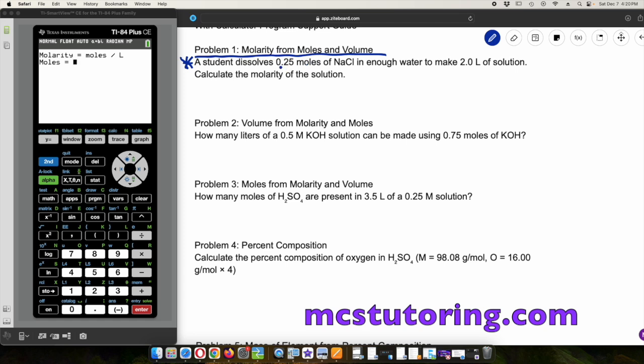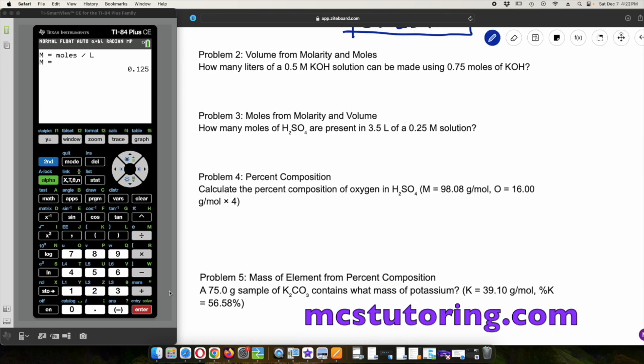A student dissolves 0.25 moles of sodium chloride in enough water to make 2.0 liters of solution. Calculate the molarity of the solution. So the moles is 0.25, and then two liters of solution. Be careful because this program is assuming liters. So if you ever get milliliters, like 500 milliliters, just type that in as 0.500 liters. It looks like we've got 0.125M. We're going to write 0.125M. M is molarity, which basically stands for moles per liter in chemistry.